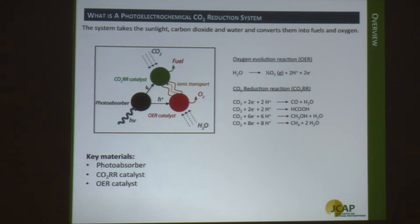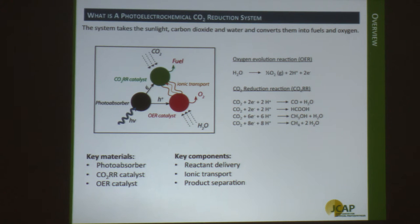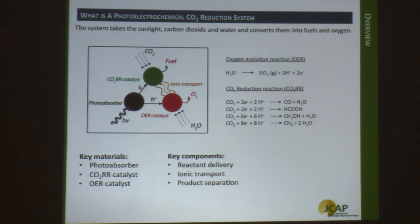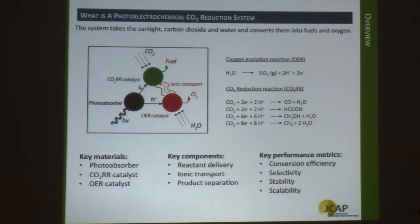There are a few key materials in the system: the photoabsorber, the CO2 reduction catalyst, and the oxygen evolution catalyst. Key components include how you deliver CO2 and water to the electrode surface, as well as ionic transport between cathode and anode. Every electron you put into the cathode requires a corresponding ionic movement to maintain charge neutrality. There are also product separation issues. One of the most important metrics is the conversion efficiency, along with selectivity, stability, and scalability.